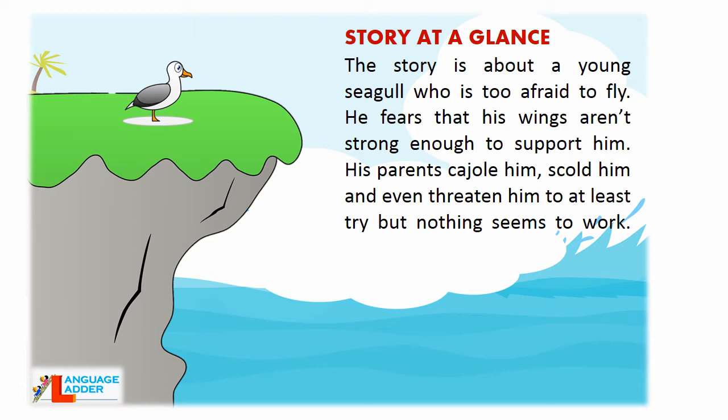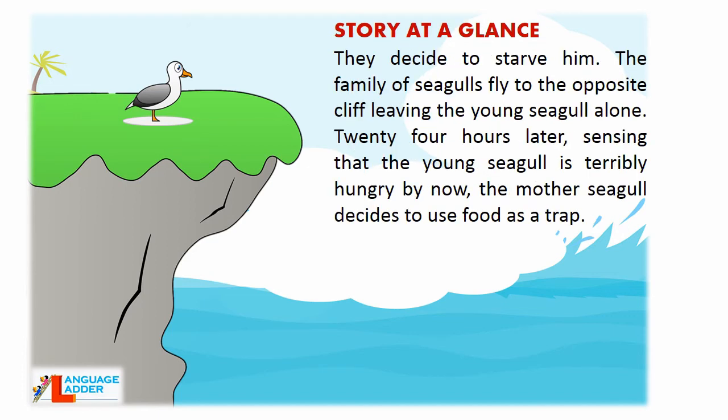The story is about a young seagull who is too afraid to fly. He fears that his wings aren't strong enough to support him. His parents cajole — that is, persuade — him, scold him, and even threaten him to at least try, but nothing seems to work. They decide to starve him. The family of seagulls fly to the opposite cliff, leaving the young seagull alone.